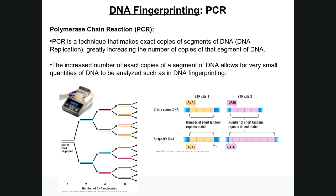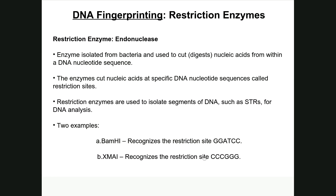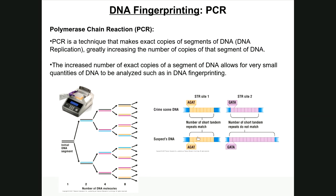In today's lab, BamH1 would be used to cut out the short tandem repeats. Where the blue areas appear in the examples, that represents the sequence GGATTC on the forward strand of DNA. The DNA from a crime scene or from a potential father would be exposed to BamH1, which cuts on one side of the STR and on the other side, so the analyst only works with the stretch of DNA containing the repeat.